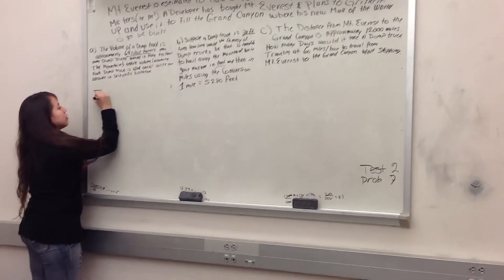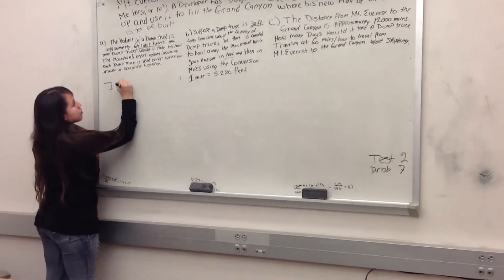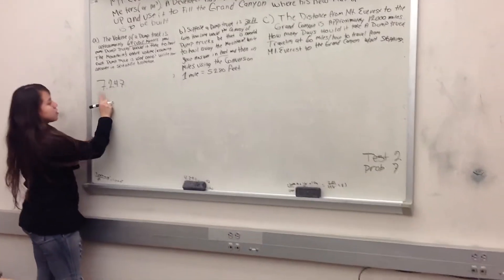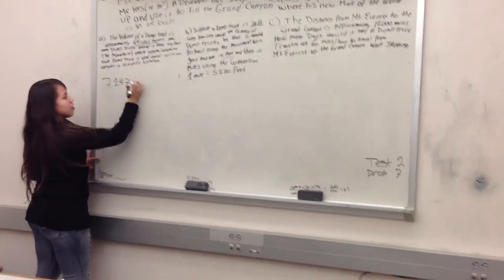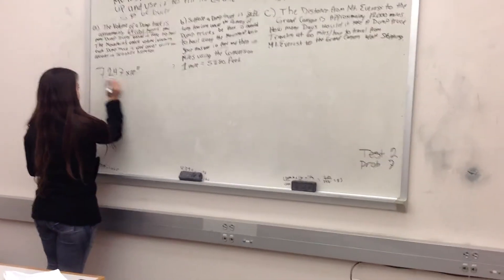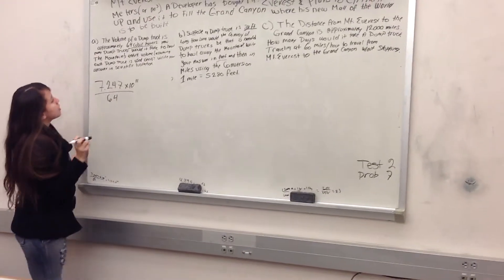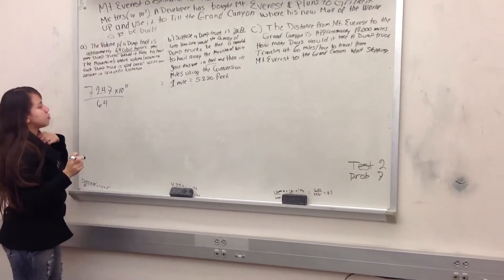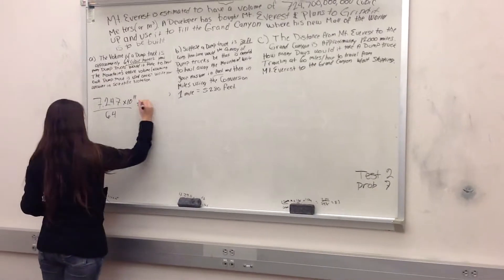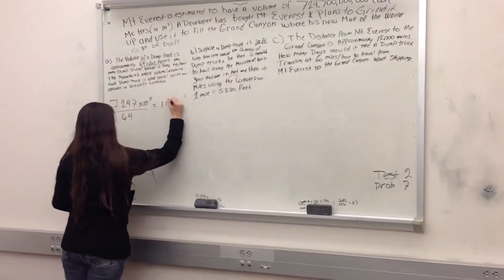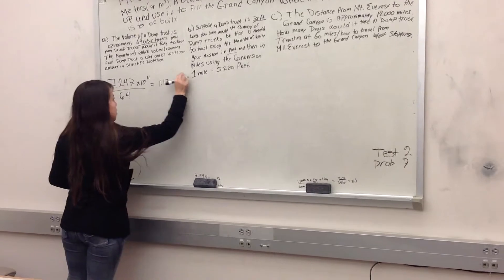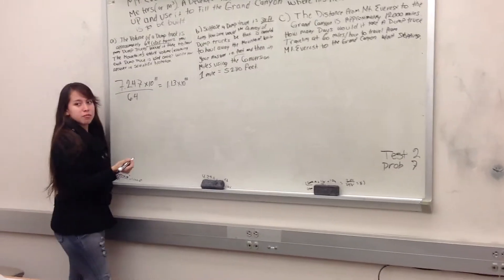So if the volume for Mount Everest in scientific notation is 7.247 times 10 to the 11, and you divide it by 64 because that's how much the dump trucks can carry, which equals 1.13 times 10 to the 10. And that's how many dump trucks you need.